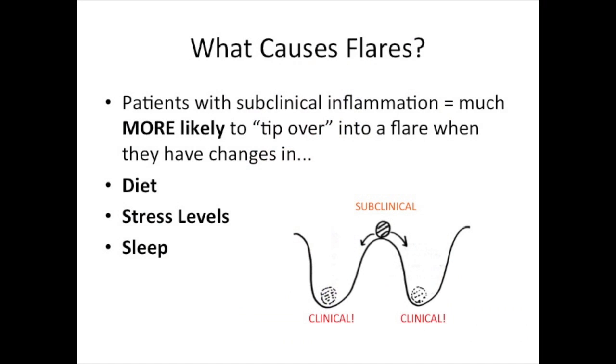In addition, we do know that patients who have biologic remission and really good control of their inflammation in IBD seem to be more resistant to changes in their diet or changes in psychological stress levels. On the other hand, patients who have subclinical inflammation seem to be much more likely to tip over into a flare when they undergo changes in diet, psychological stress, or sleep.